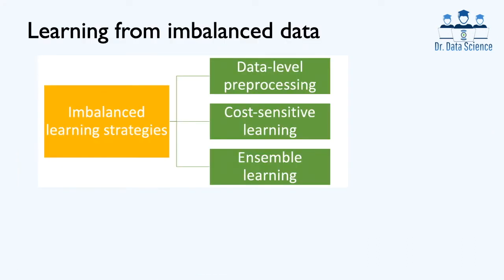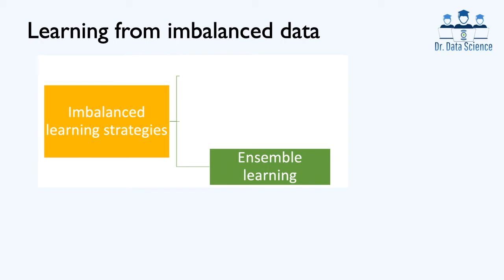As we mentioned before, there are three main categories to tackle the class imbalance problem: data-level preprocessing methods including oversampling and undersampling, cost-sensitive learning strategies, and the third one that we focus on in this video is ensemble learning.